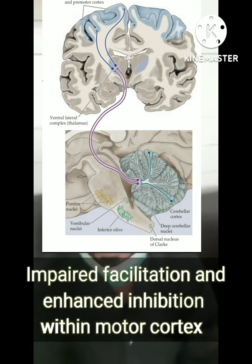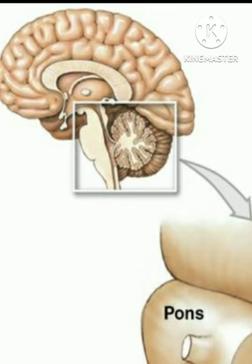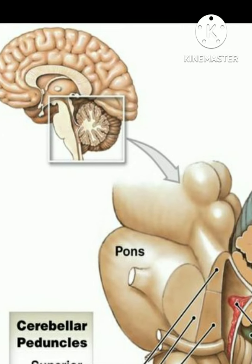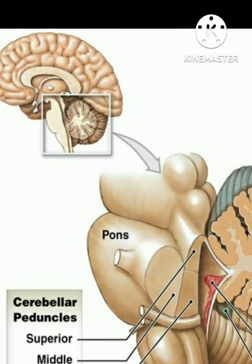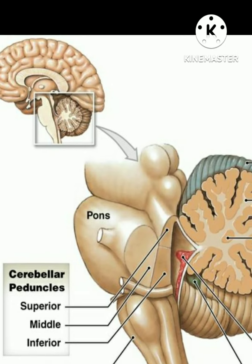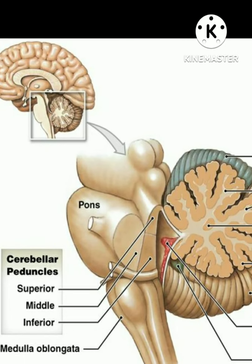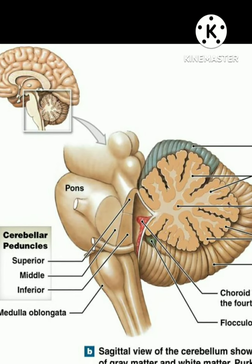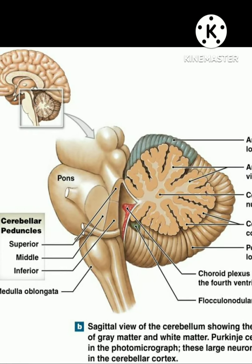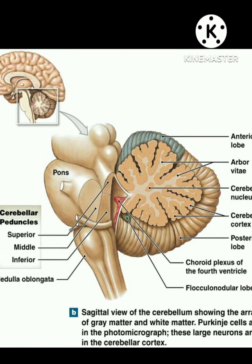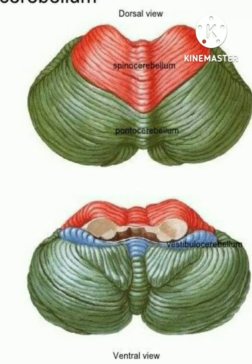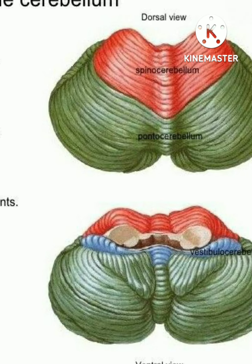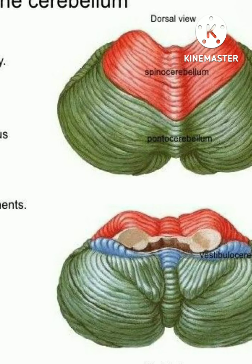Let us discuss the normal anatomy of the cerebellum first. Always remember that the cerebellum has three peduncles: the superior, the middle, and the inferior. Coming to the lobes, it has three lobes in terms of functional division. These are the spinocerebellar lobe, the vestibulocerebellar lobe, and the pontocerebellar lobe.